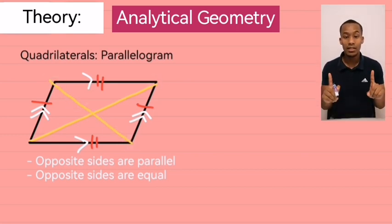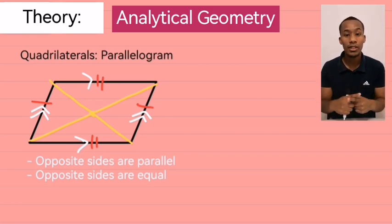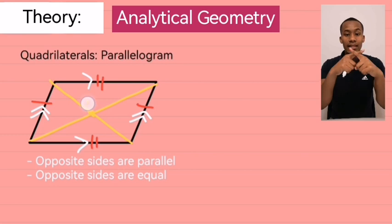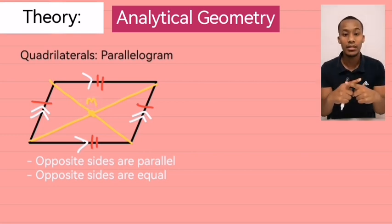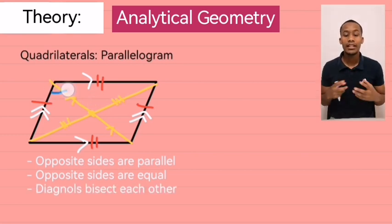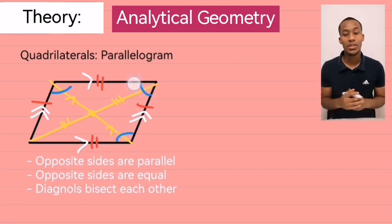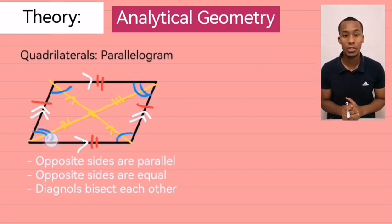Now, what does that mean? If the diagonals bisect, it means they cut each other in half. So, they intersect at the midpoint of those diagonals. And lastly, opposite angles of a parallelogram are equal.